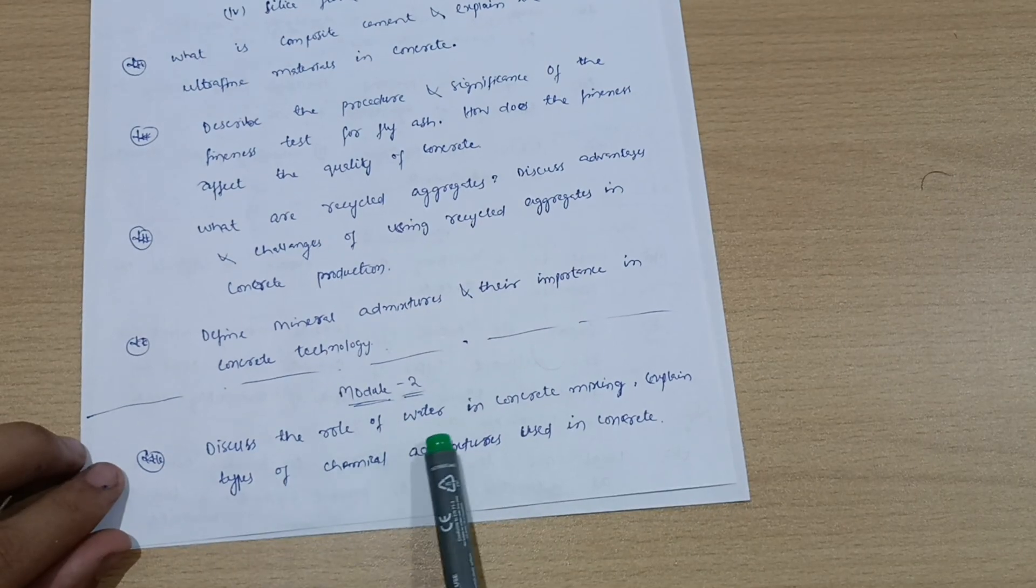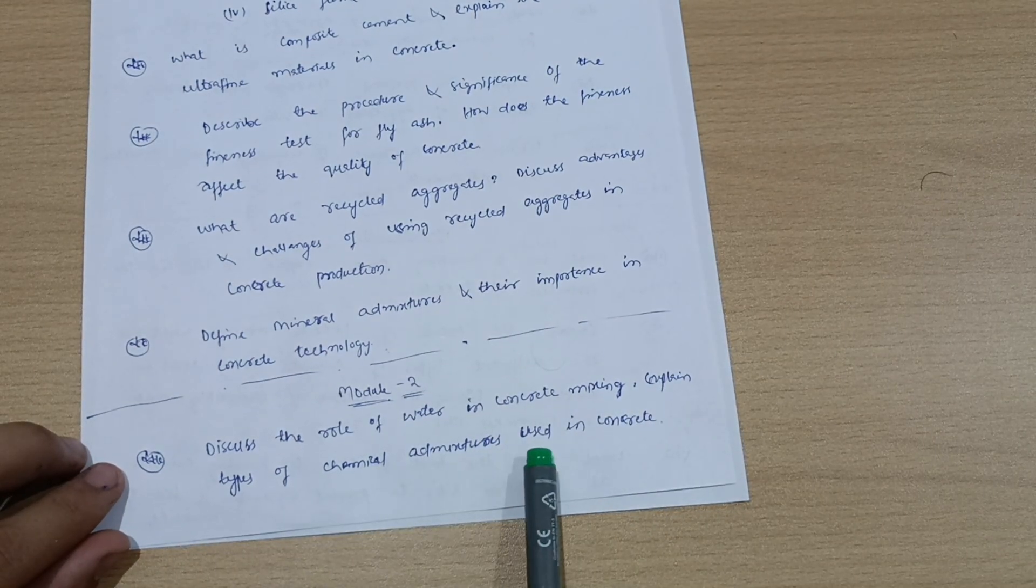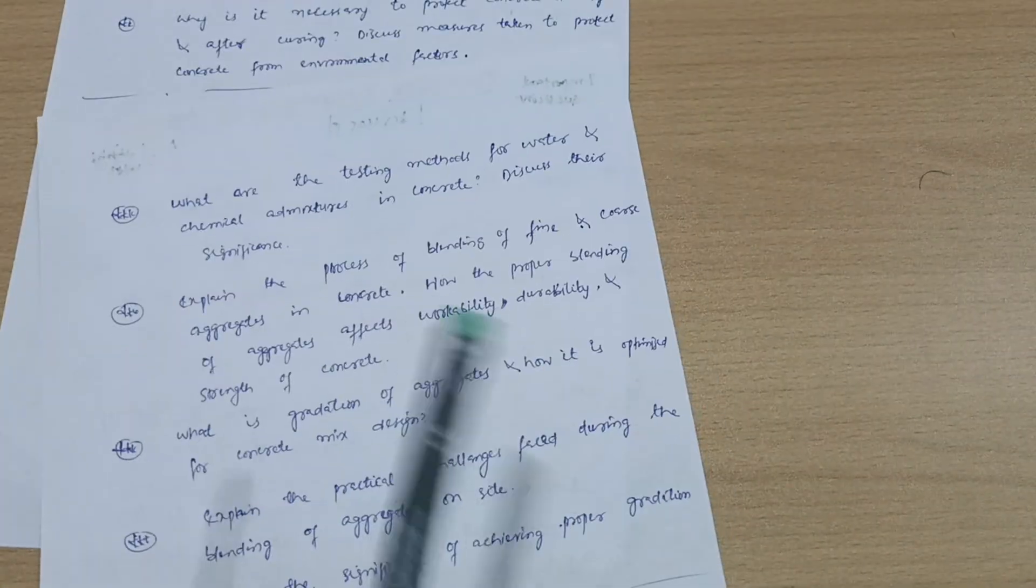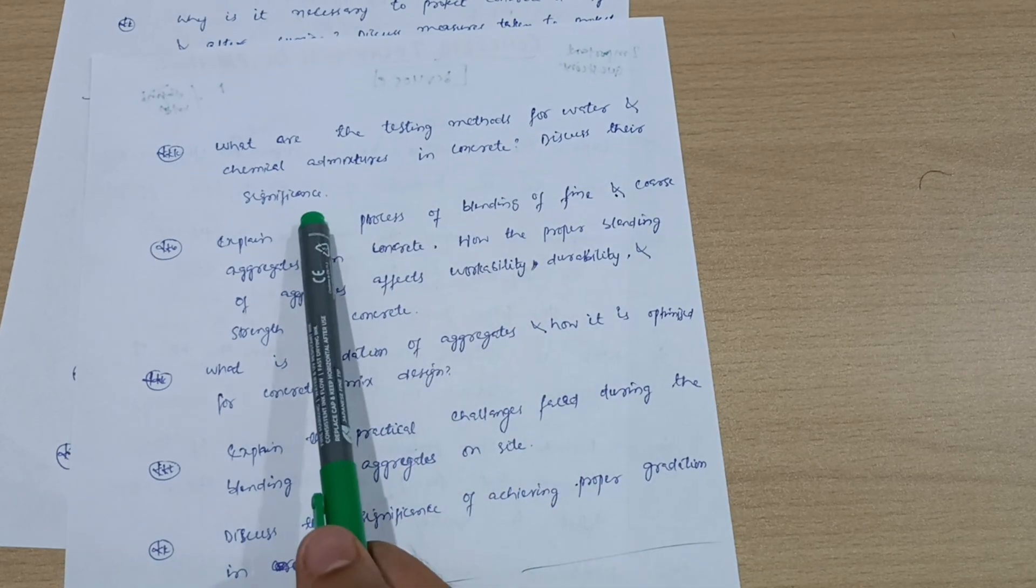Next is Model 2. Discuss the role of water in concrete mixing. Explain types of chemical admixtures used in concrete. What are the testing methods for water and chemical admixtures in concrete? Discuss their significance.